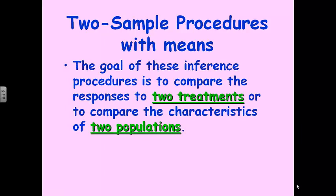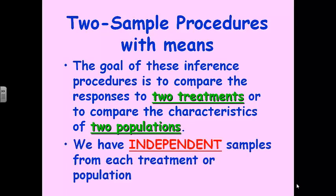For two sample procedures with means, the goal of these procedures is always to compare the responses to two treatments, or maybe we're comparing the characteristics of two different populations. If we're doing a survey and comparing characteristics of populations, we refer to it in that way. Either way, we must have independent samples from each treatment or population — that is imperative.